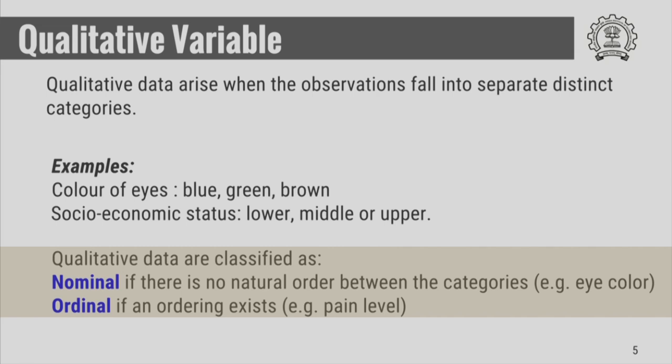Qualitative data are classified as nominal if there is no natural order between the categories, and ordinal if an ordering exists.